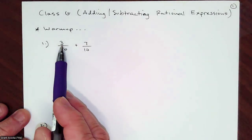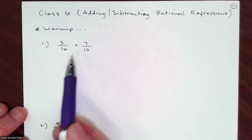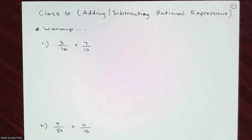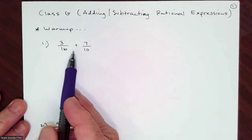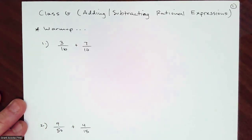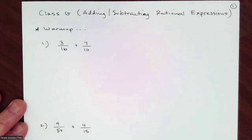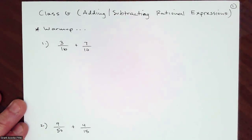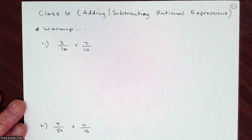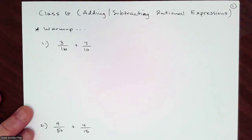If I want to add three sixteenths plus seven tenths, a common denominator that will always work is you can just multiply the denominators together and get 160, which is a common denominator. But when we start changing our numbers to algebra expressions, it's going to be much more simple if we can get the lowest common denominator.